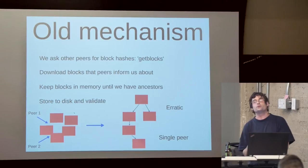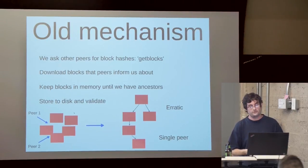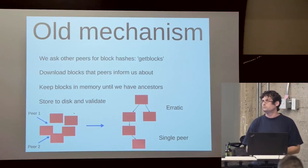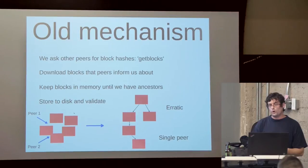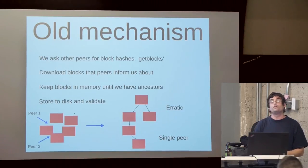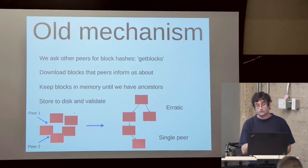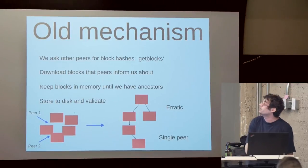I'm proud that Bitcoin uses this deterministic build process; it has received very little attention. This process has been extended in 0.10 — mostly the work of Corey Fields. There is now a mini dependency-building system inside the Bitcoin source code that allows you to build for any supported system from Linux: OS X, Windows, and so on. We now also have deterministic binaries for Mac OS X in 0.10.